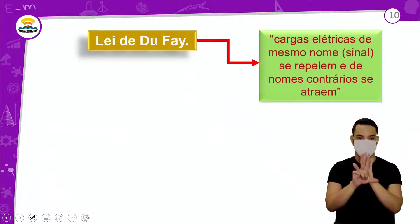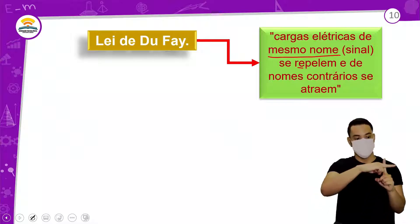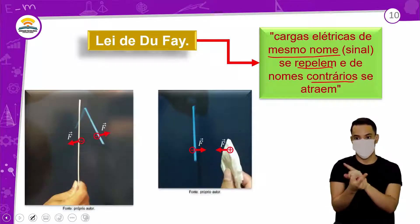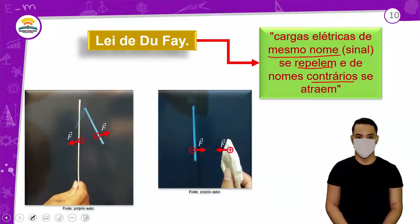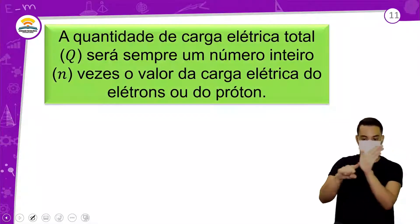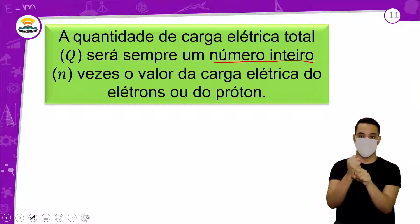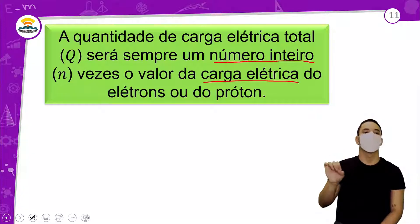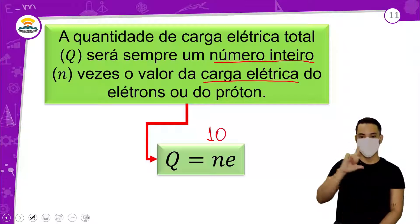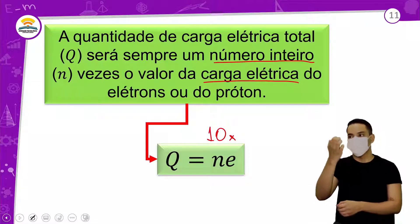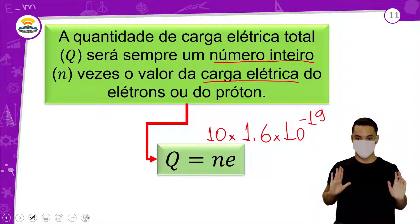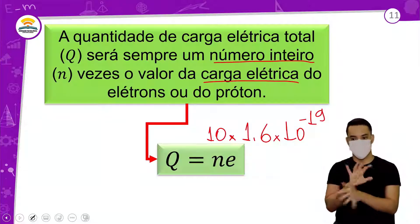A lei de Dufay fala: cargas elétricas de mesmos sinais se repelem e de sinais contrários se atraem. Sinais iguais repelem, sinais contrários se atraem. A quantidade de carga elétrica total será sempre um número inteiro N vezes a carga elementar E. Se eu tenho 10 elétrons ou 10 prótons, vai ser 10 × 1,6 × 10⁻¹⁹. N vezes E: número de elétrons ou prótons vezes a carga elementar.